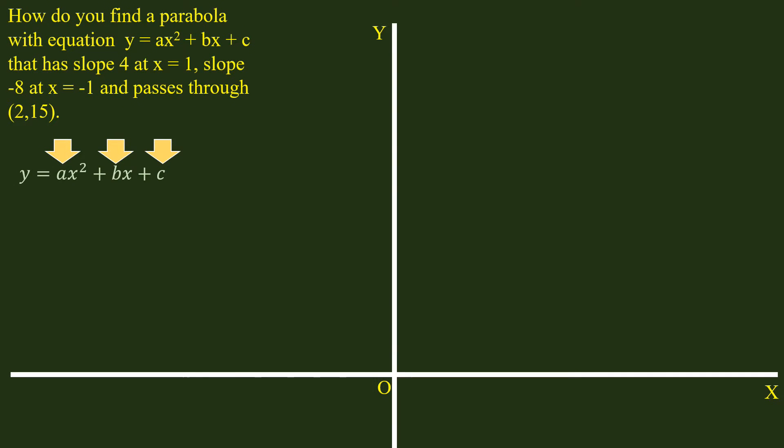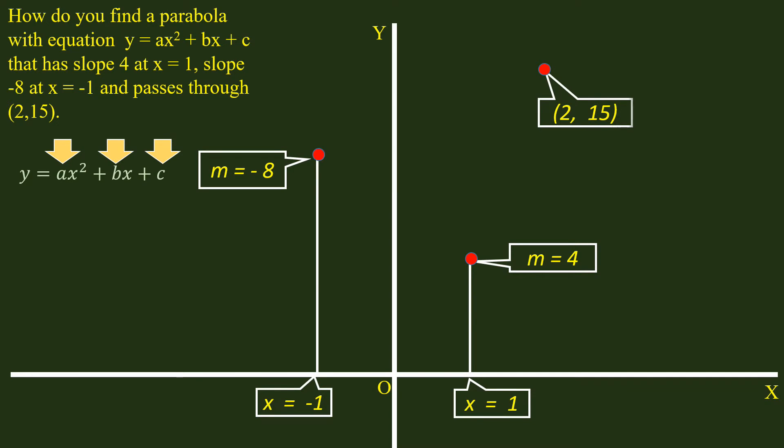We are given slope at x = 1, it is 4. Slope at x = -1, it is -8. It is passing through the point (2,15). With this information, we have to find the values of a, b, and c.